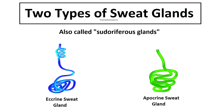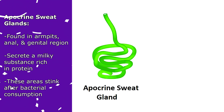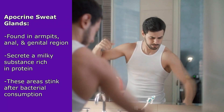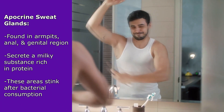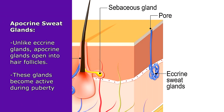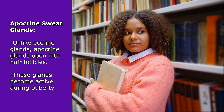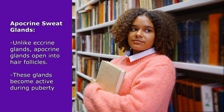The other main type of sweat gland is called an apocrine gland. These glands are primarily found in the armpits and anogenital region, and they secrete a milky substance rich in protein that stinks after bacteria come and feast on it. Unlike eccrine glands, which have pores that open onto the skin surface, apocrine glands secrete their milky substance through openings in hair follicles. They don't become active until the hormonal changes during puberty.